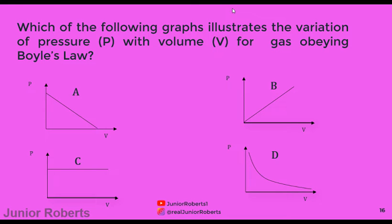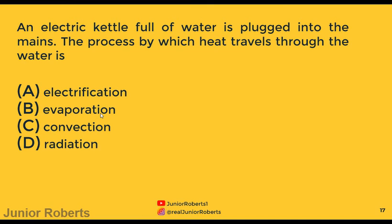This question asks which graph illustrates the variation of pressure and volume for a gas obeying Boyle's law. Since pressure and volume are inversely proportional according to Boyle's law, the graph showing an inverse proportionality relationship is D. The answer is D.